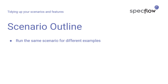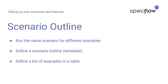A scenario outline enables you to run the same scenario for different examples — different combinations of input and output data — without having to repeat the same scenario over and over again in your feature file. You create a scenario outline, also known as a scenario template, which is just like a regular scenario but with placeholders for the values that are going to be parameterized. You then add a list of examples in a table, and SpecFlow will treat each row just like a separate scenario.